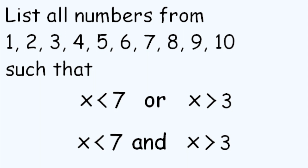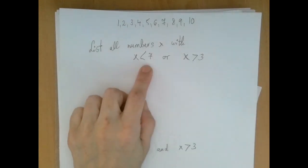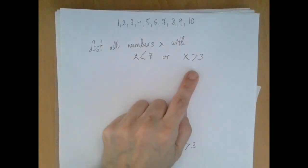The numbers 1 through 10 are given, and from this we would have to find all the numbers such that x is less than 7 or x is greater than 3.